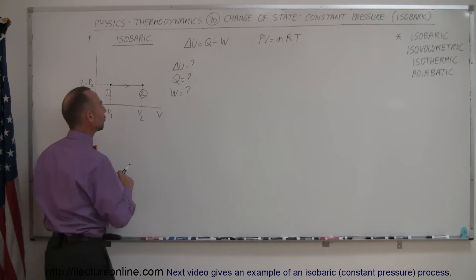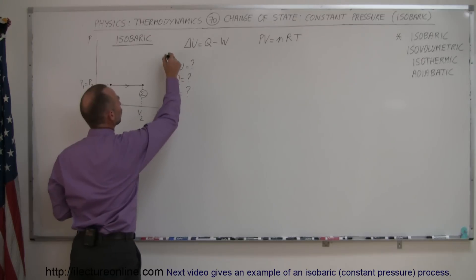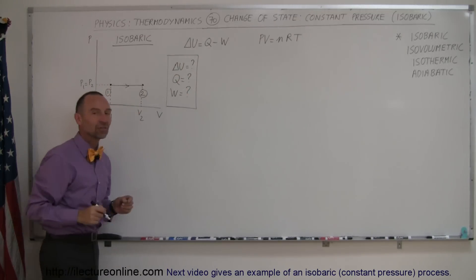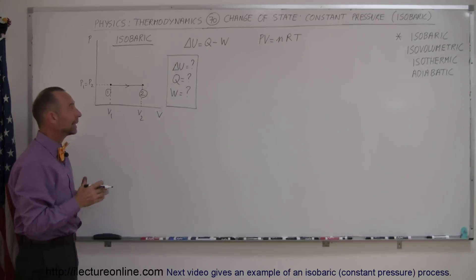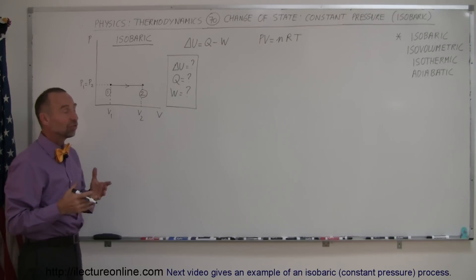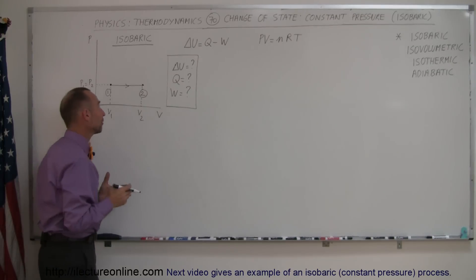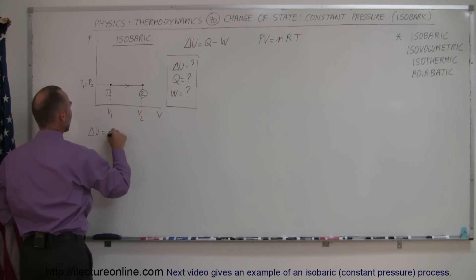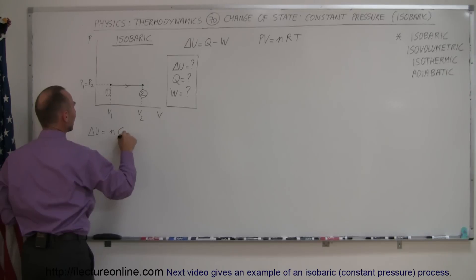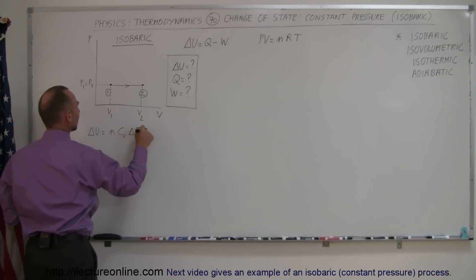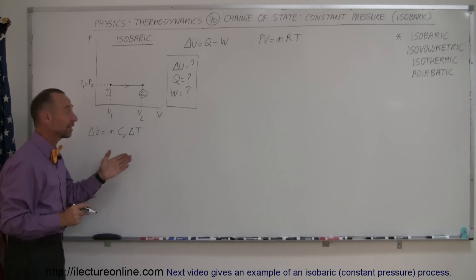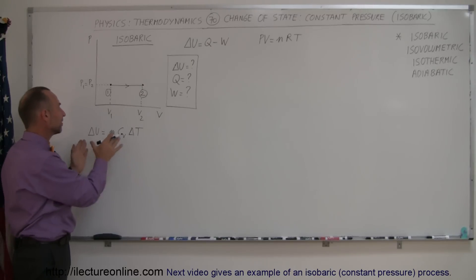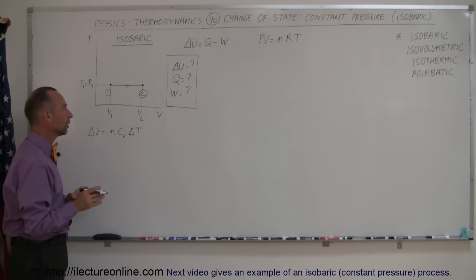In each case, we're going to try to figure out what the change in internal energy is, what the heat added to the gas is, and what the work done by the gas is. The change in internal energy is usually pretty straightforward — we know that ΔU is always going to equal NcᵥΔT. Now, if you don't know what ΔT is, you won't be able to figure that out directly, but that's how we typically do it.